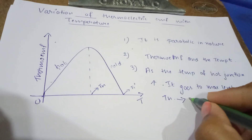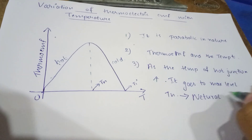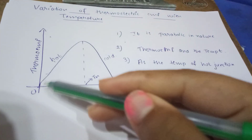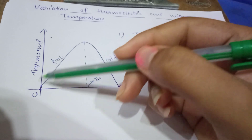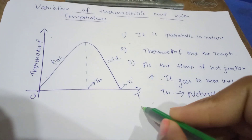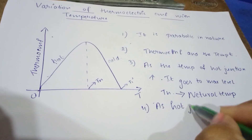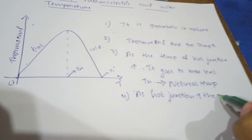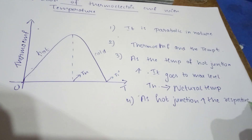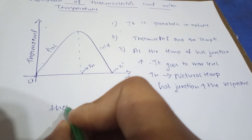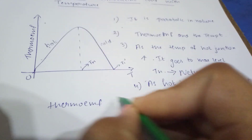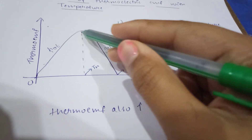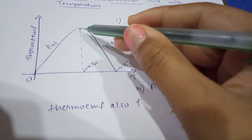This T-N is called the neutral temperature. As the hot junction temperature is increased, the thermo EMF also increases. You have to write that as: as the hot junction increases, the respective thermo EMF also increases.